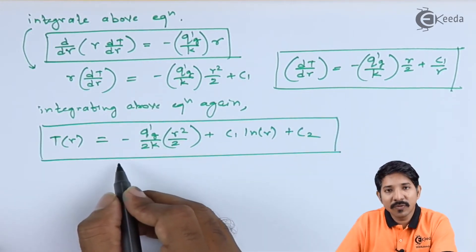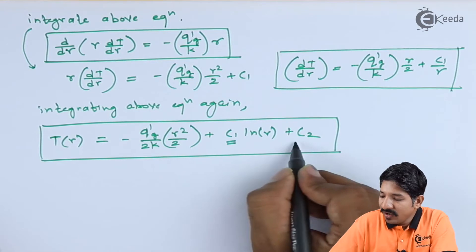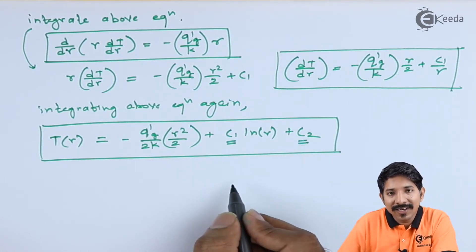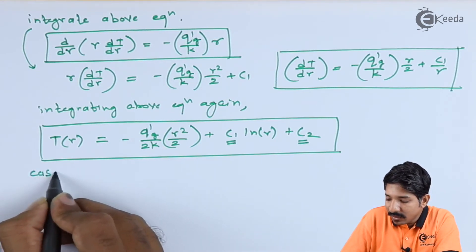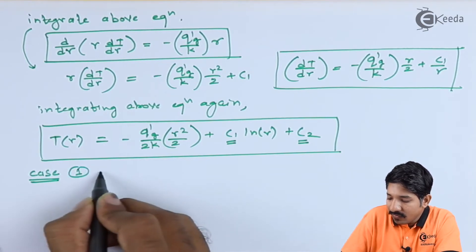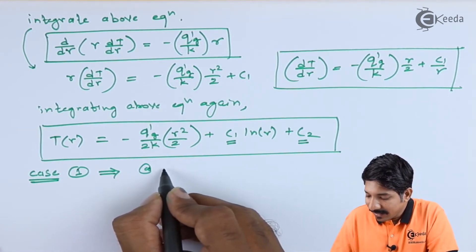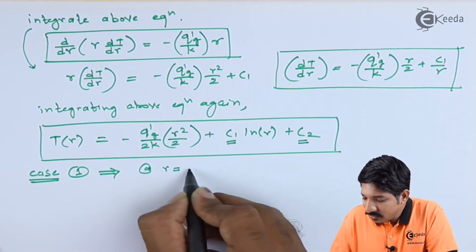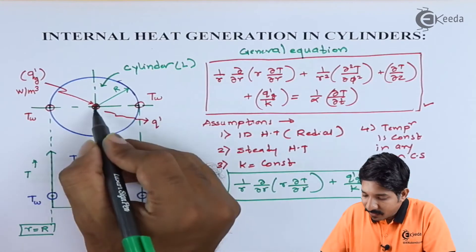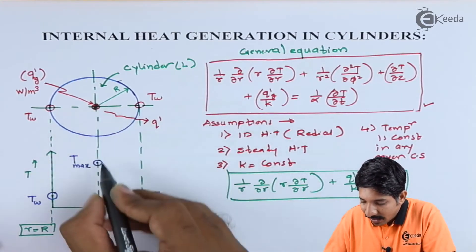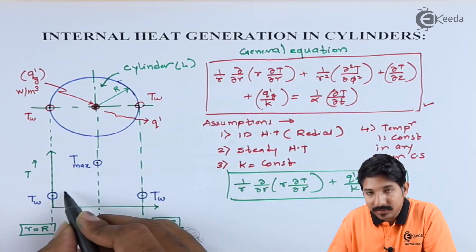This is the temperature profile we have obtained. To solve this we need to find the values of C₁ and C₂ using two boundary conditions. The first case: at r = 0, dT/dr = 0. At r = 0 the temperature is maximum (T_max), so the slope there is horizontal, meaning dT/dr = 0.